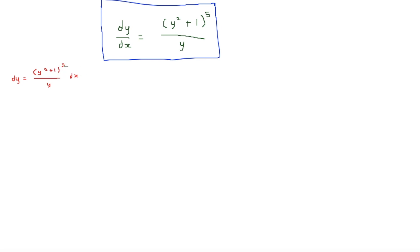Since we're dividing by y squared plus 1 to the power of 5 over y, we flip it around. So what we get is y over y squared plus 1 to the 5, all dy, on the left hand side. Now let's integrate both of these.